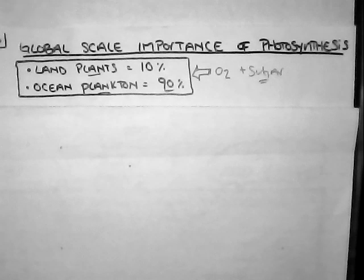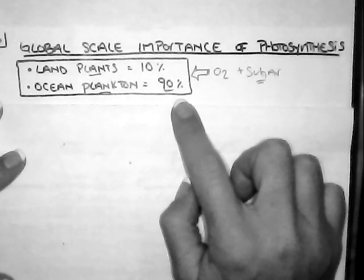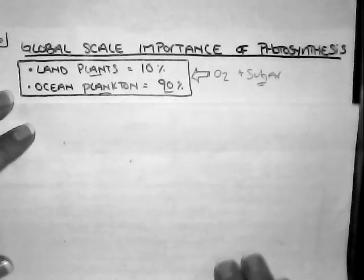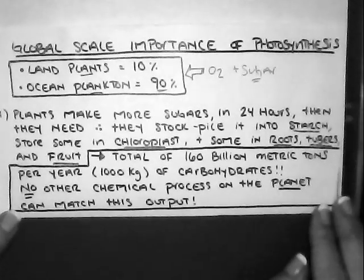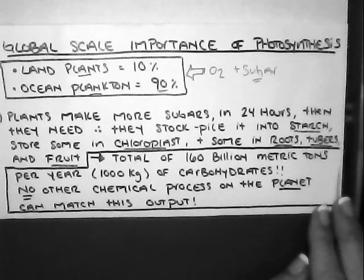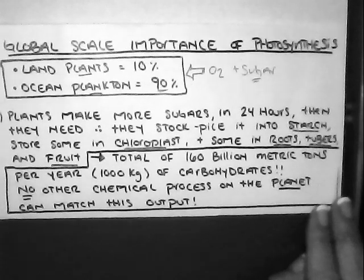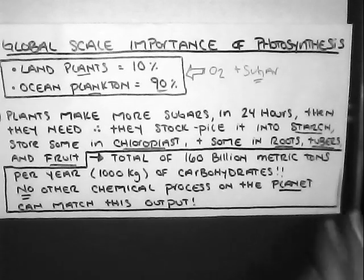So what are we going to do with all this 36 ATP? Well, let's look at it on a global scale — land plants versus ocean plants. Because our Earth is dominated primarily with the ocean, it produces about 90% of the oxygen and sugar that we actually use as a food source or as air. Plants make more sugars in 24 hours than they need; therefore, they stockpile it into their starches — they store it in the chloroplasts, their roots, their tubers, their fruit. There's a total of about 160 billion metric tons per year that plants make of carbohydrates, and there's no other process on the planet that can actually match this output.